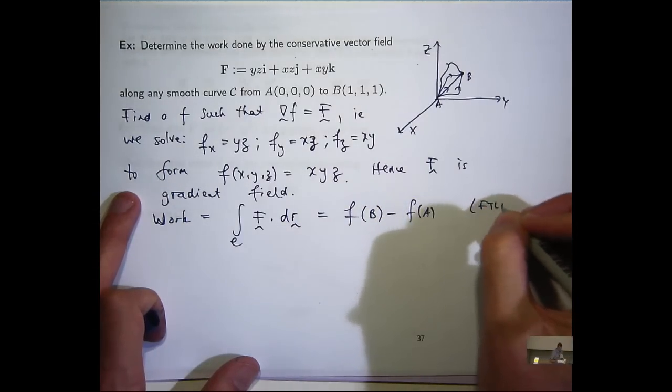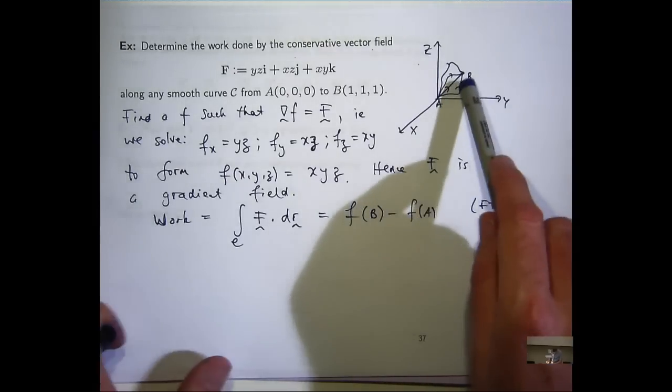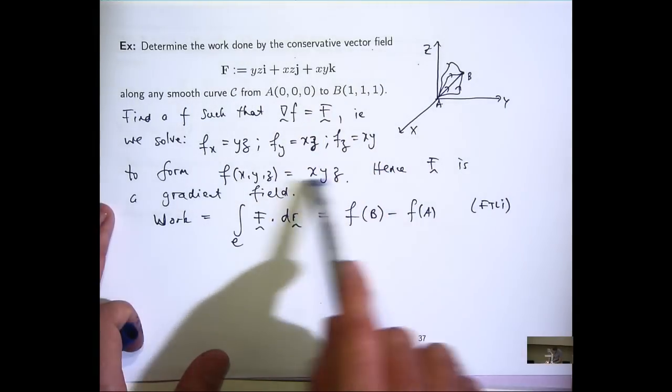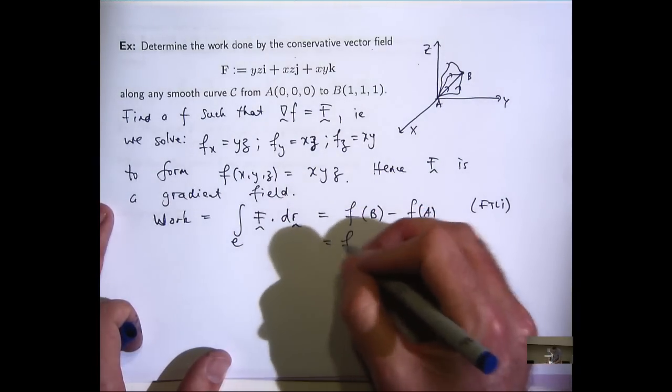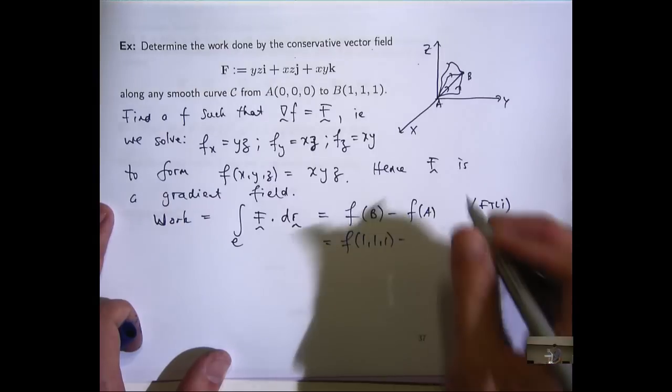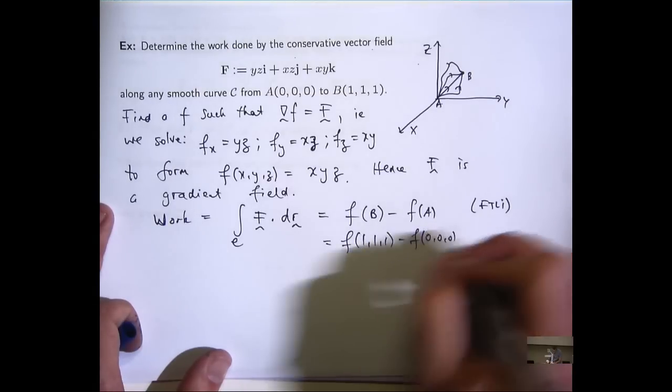So what is f at the point b? Well, b is just 1, 1, 1. So I go up here, which is 1 times 1 times 1. And at 0, okay, so this is going to be 1.